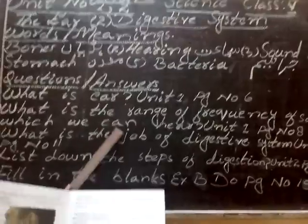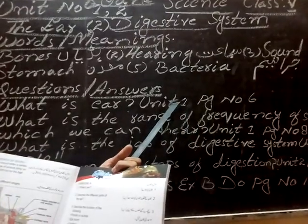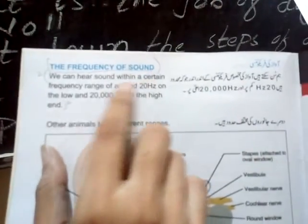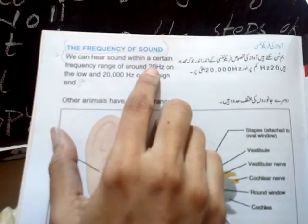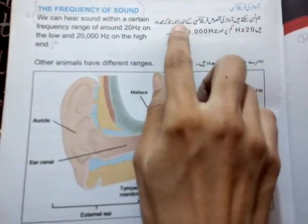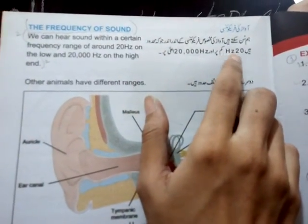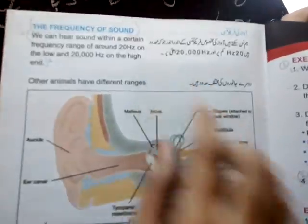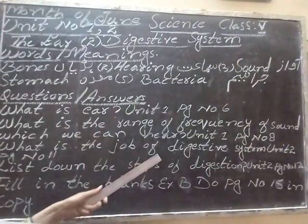Question No. 2: What is the range of frequency of sound which we can hear? The frequency of sound — we can hear sound within a certain frequency range of around 220 Hz on the low end and 2000 Hz on the high end. Hum sun sakte hain awaaz ki makhsus frequency ke andar jo ke mahdood hai, ej jet two zero kam par aur 2000 aala darje par.